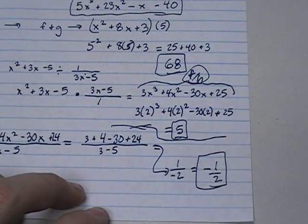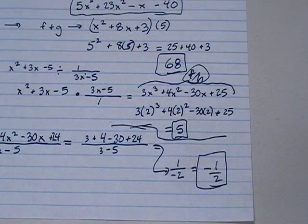So kind of a fun little problem there. We work all of this out, and we end up getting negative 1 half. This is function arithmetic: adding, subtracting, multiplying, and dividing with different functions. If you have any questions, please let me know. Thank you.